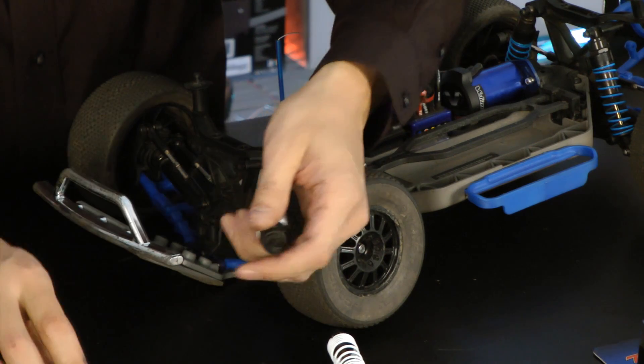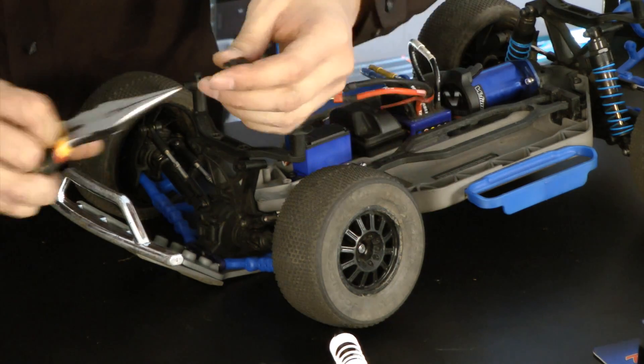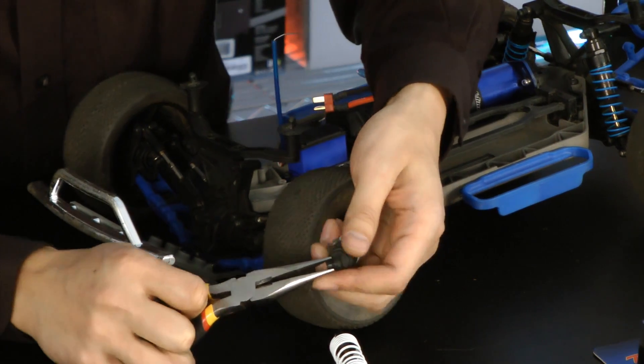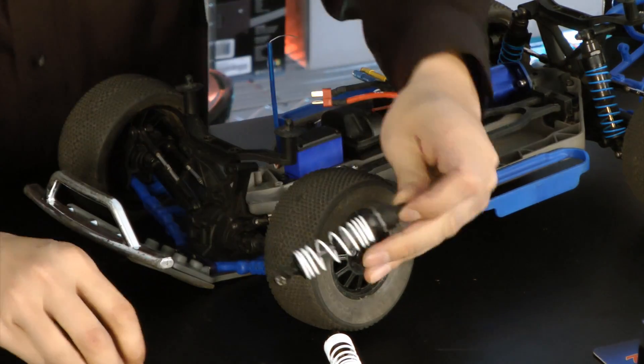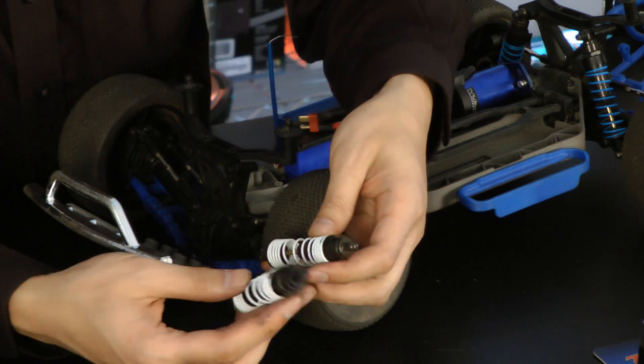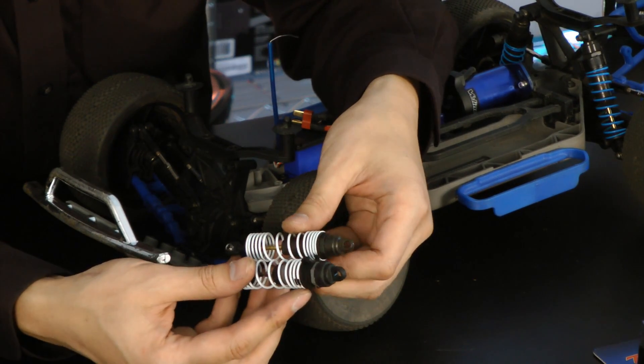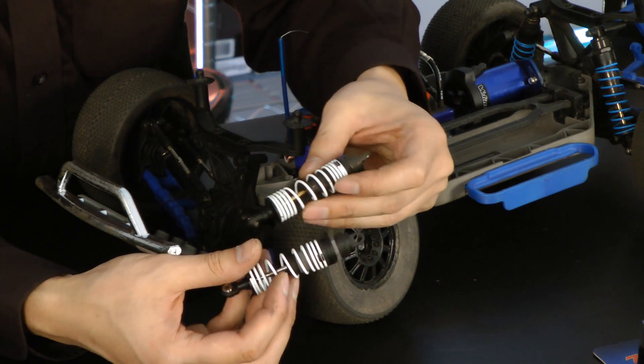So with the stock shocks removed here, I'm just using some pliers to remove this little eyelet spacer on the top of the shocks here. Let's just do a quick compare between the stock shock and the big bore shock.